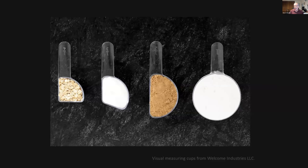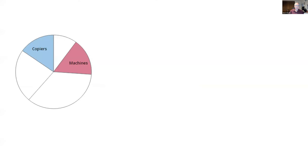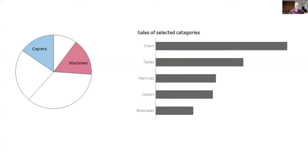Which is why, by the way, these badass measuring cups from Welcome Industry are instant reads — one quarter, one third, one half, total. So the other thing is — you're great at being able to estimate the slices of pies if they start at midnight. But comparing one slice with another slice is really tough. Can you tell me which is bigger — copiers or machines? This becomes trivially easy when you do it as a bar chart.